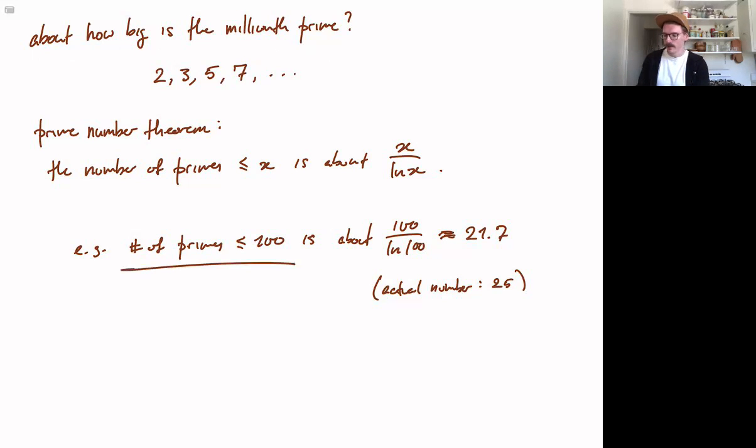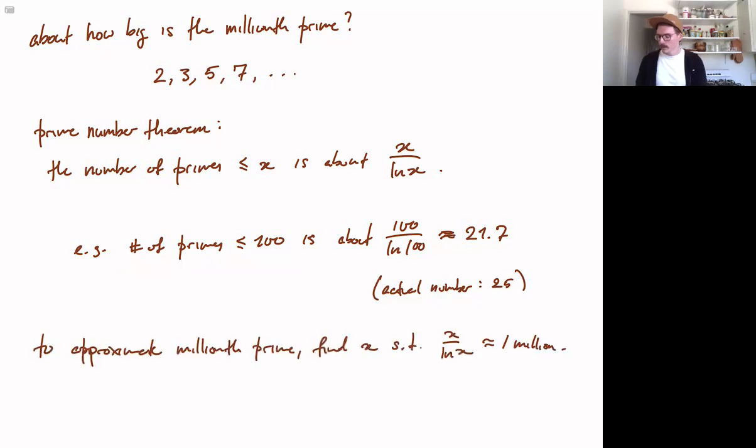Basically, we can do this by using the prime number theorem in the reverse direction. The millionth prime is going to be a number that has about 1 million primes less than it. So we just have to turn this around.